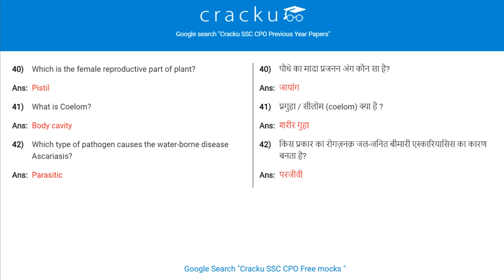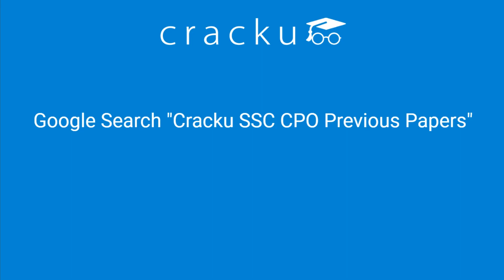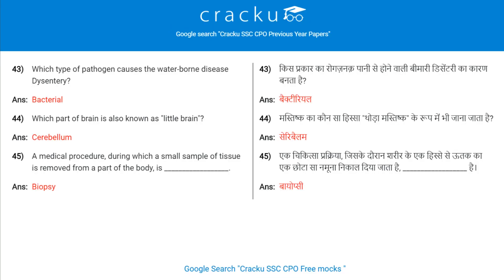What is coelom? Body cavity. Which part of a pathogen causes the water-borne disease Ascariasis? Parasitic. Which type of pathogen causes the water-borne disease Dysentery? Bacterial. Which part of the brain is also known as the little brain? Cerebellum.